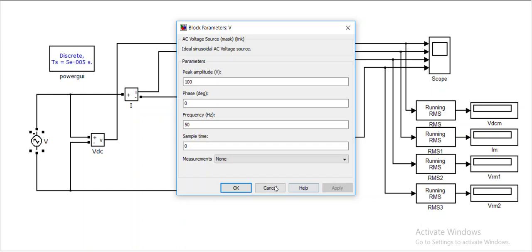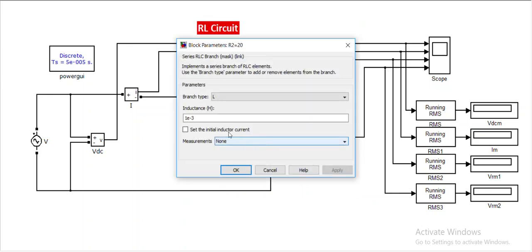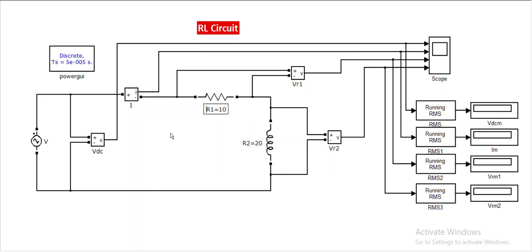The frequency should be 50 Hz — apply and OK. The resistance should be 35.35 ohms and the inductance should be 195 mH. This is the resistance 35.35 ohms, this is the inductance value 195 mH, and this is the voltage. The RMS value shown is 70.70 V. Now I would like to run this simulation.